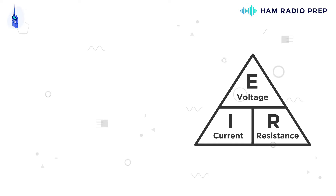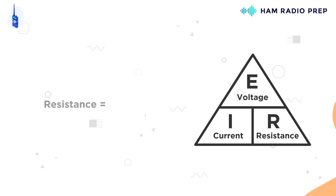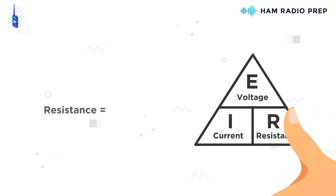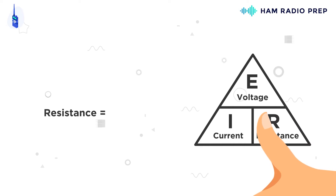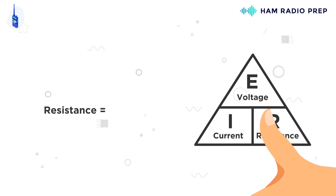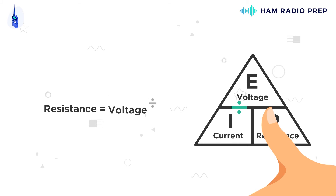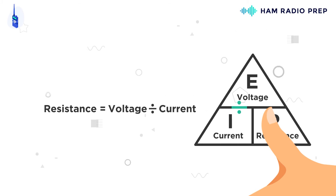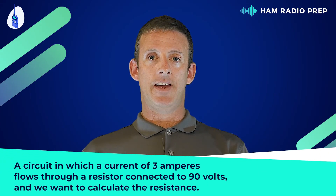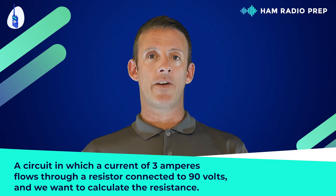Now let's use the triangle to calculate resistance. First, circle the resistance R. Notice that the voltage E is on top of resistance, so add a division sign. Now you have your answer: resistance R equals voltage E divided by current I.